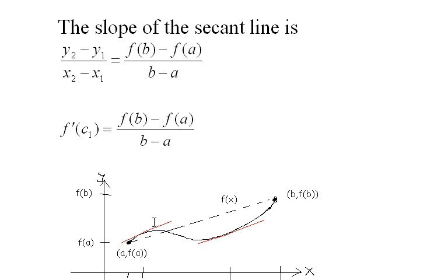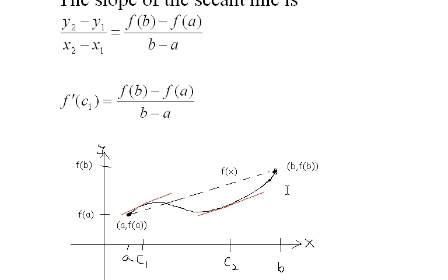And notice also that c₁—the curve f(x) has the same slope as the secant line. And we know that the derivative is the slope of the curve at any point. So f'(c₁) is the slope of this red line, which is also the slope of the secant line, so they're equal. And I could do the same thing with c₂.